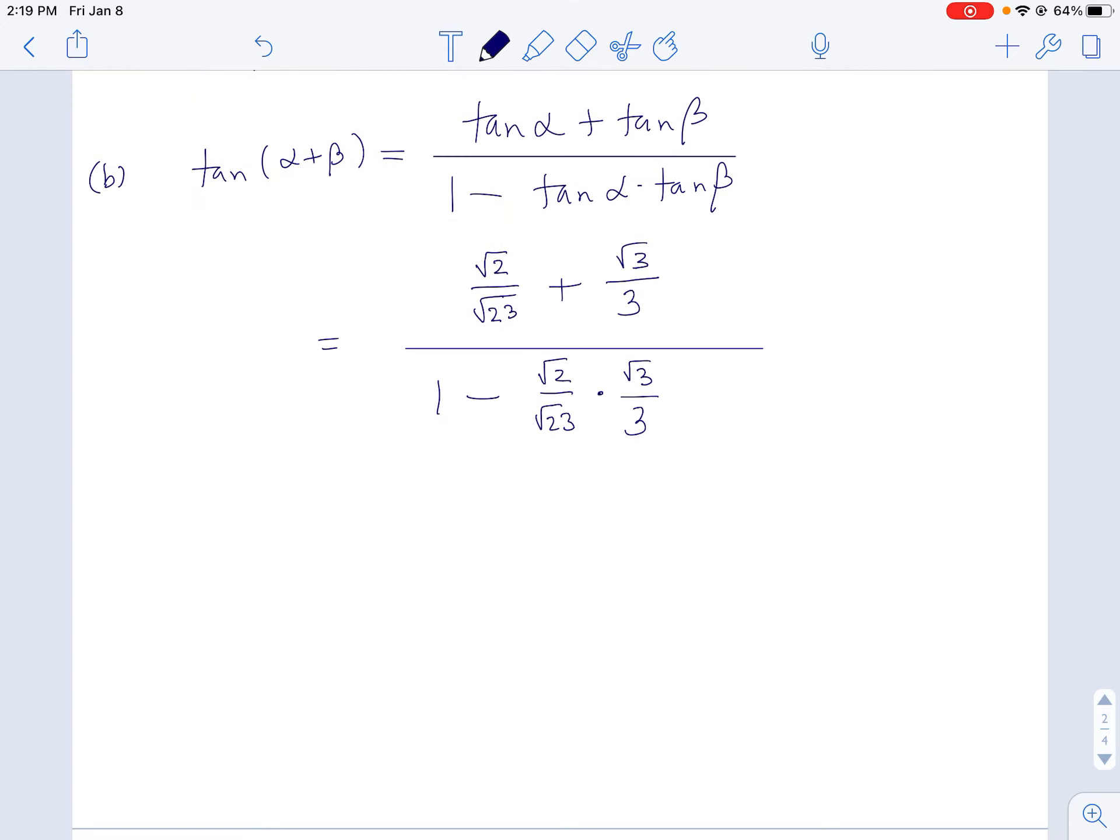And, you know, that's really my answer, but you have to simplify it. And the way you simplify this is to get rid of these fractions within fractions. On the very top, I have root 2 over root 23 plus root 3 over 3. On the bottom, I have 1 minus root 2 over root 23 times root 3 over 3.